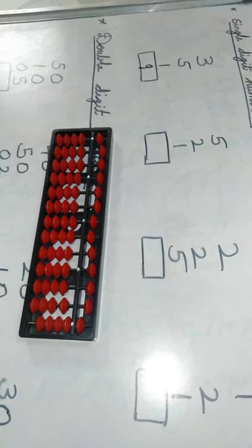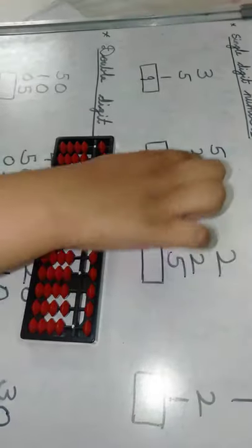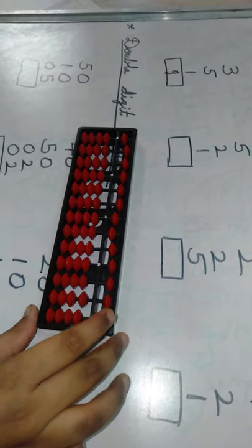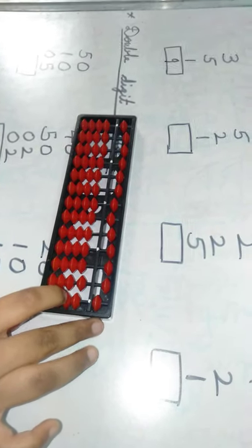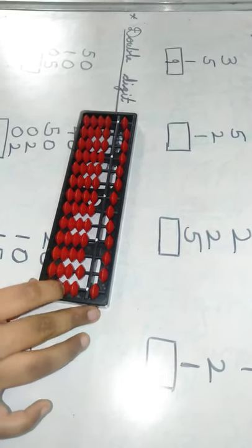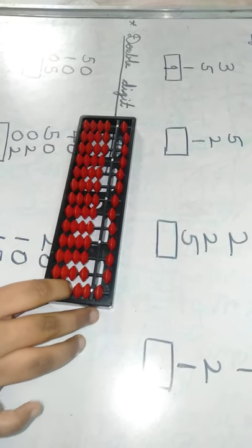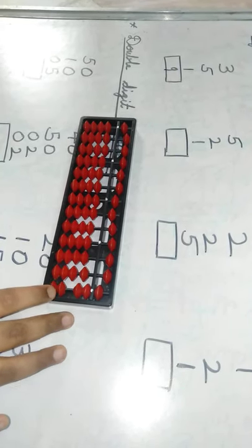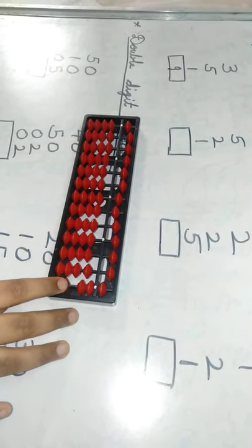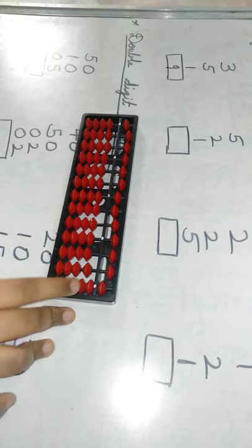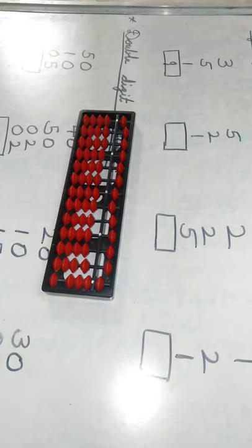Now let's go for the next problem. 5 — we have to move the upper bead in the 1's place. 2 — we have to move 2 lower beads in the 1's place: 1, 2. Then we have to move 1 more bead in the lower beads. The total answer is 8. We have to write here 8.